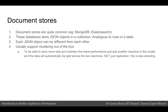Let us talk about document stores, which is a category of NoSQL databases. MongoDB and Elasticsearch are the two most common examples of document stores. These databases store JSON-like objects in a collection, and these objects or documents are analogous to rows. Both MongoDB and Elasticsearch try to support clustering out of the box, which means if you want to store more data with the same performance, you just add another machine to the cluster and the database system will automatically replicate and shard the data between instances in the cluster.